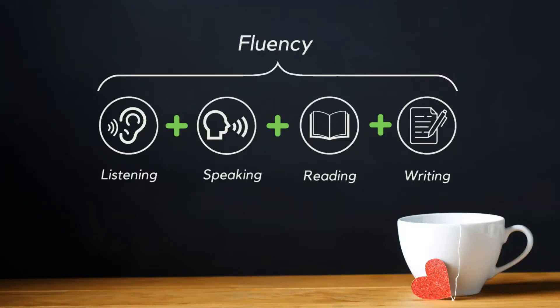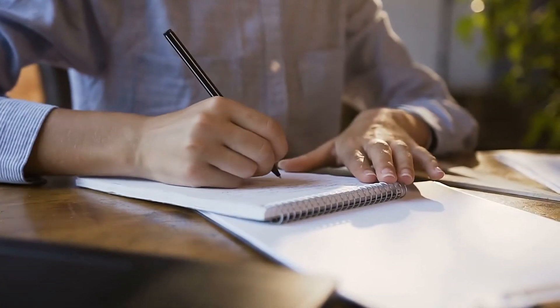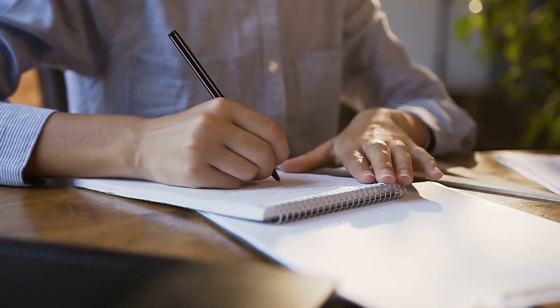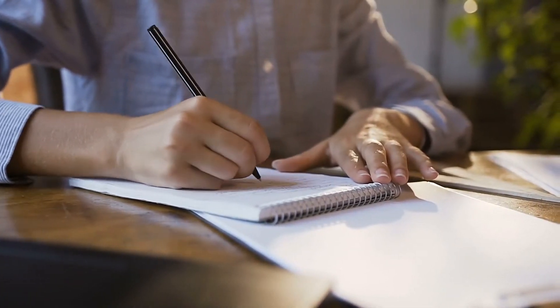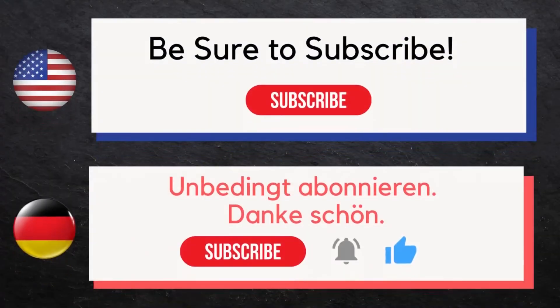It's recommended that you listen, speak, read, then write while speaking for the most effective education. First we'll speak the word in English, then we'll speak the word twice in German. Try to repeat with us the second time. Then watch this video a second time and write each of these words in German while speaking them aloud. Be sure to subscribe. Thank you.